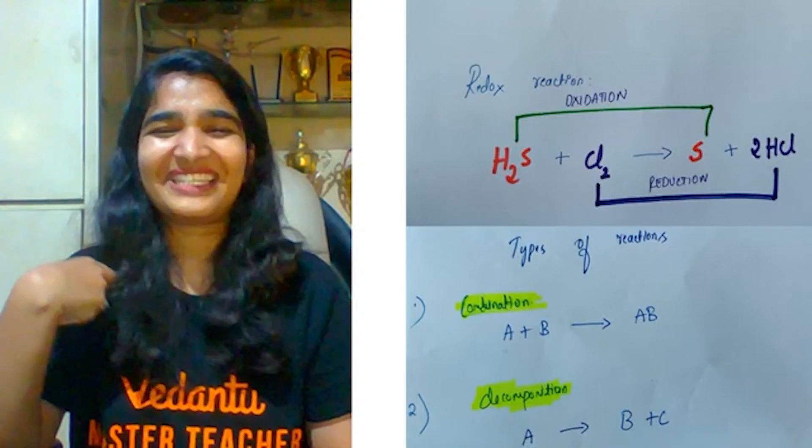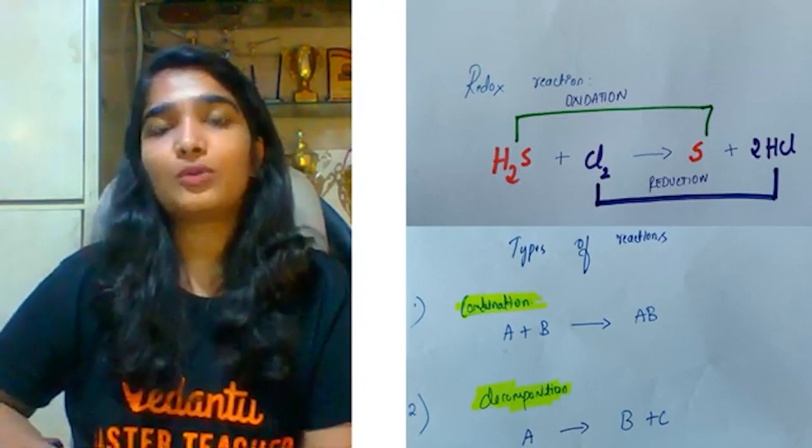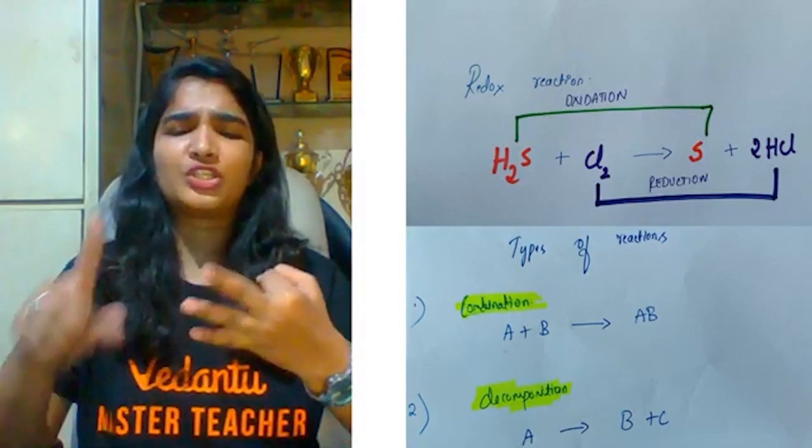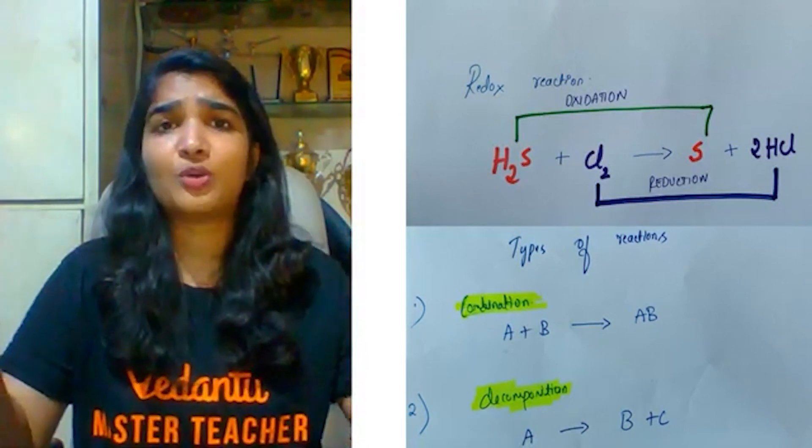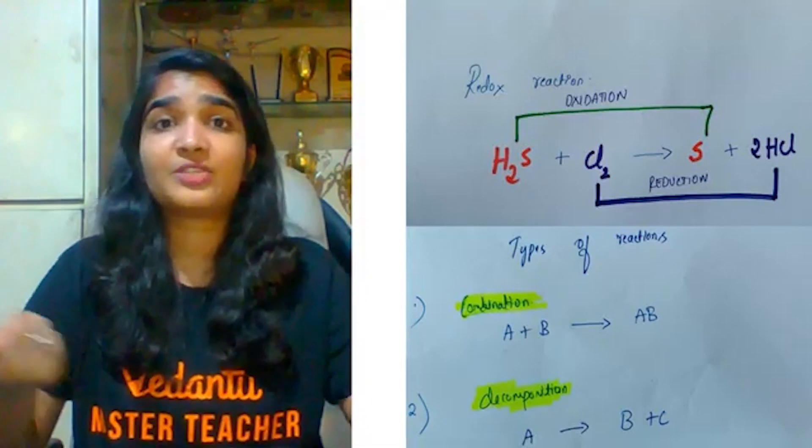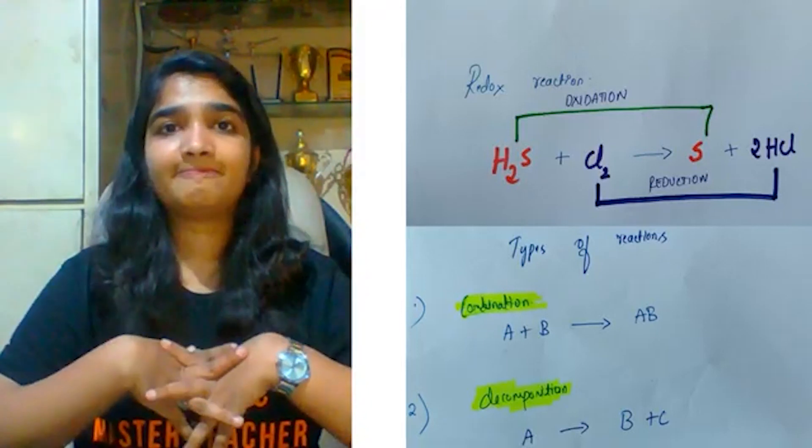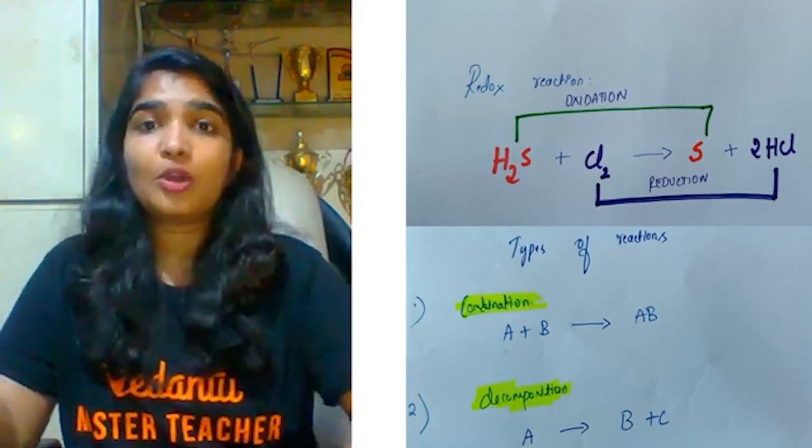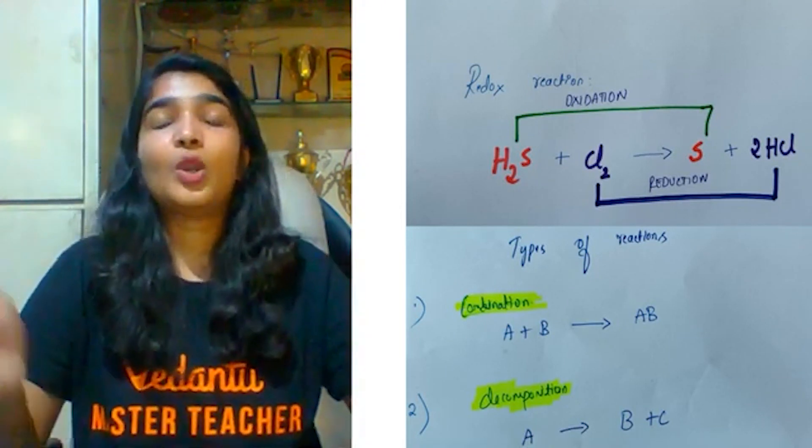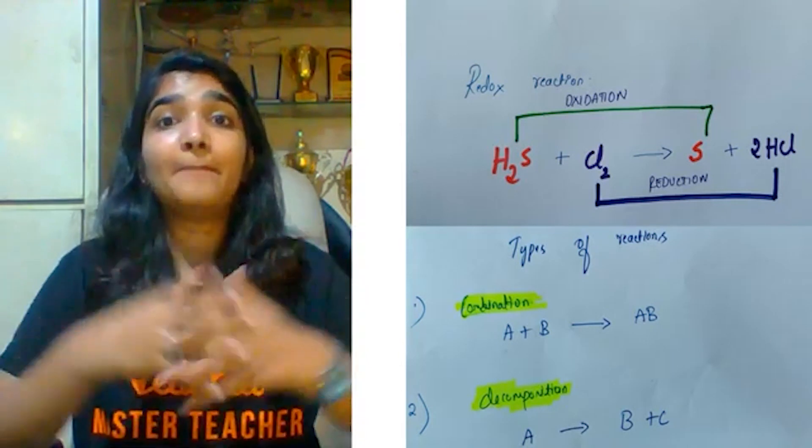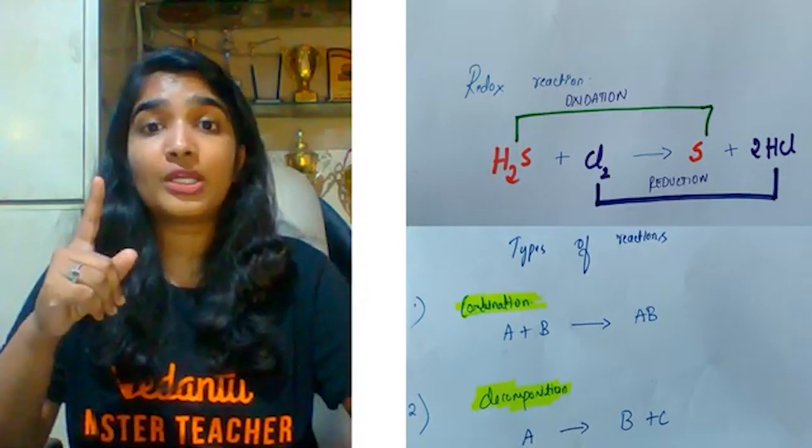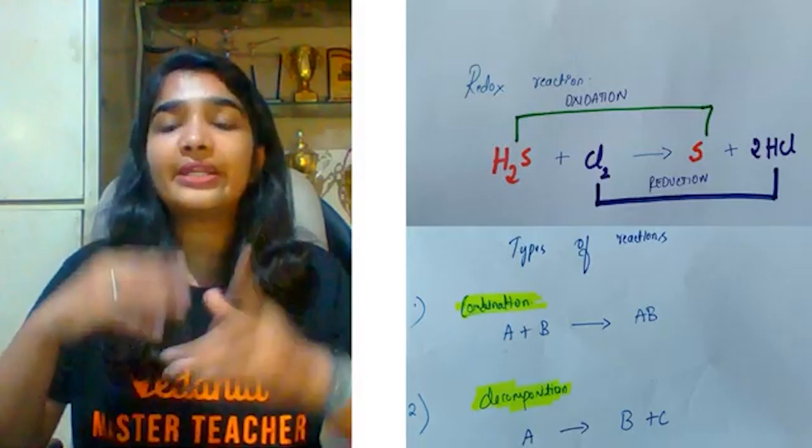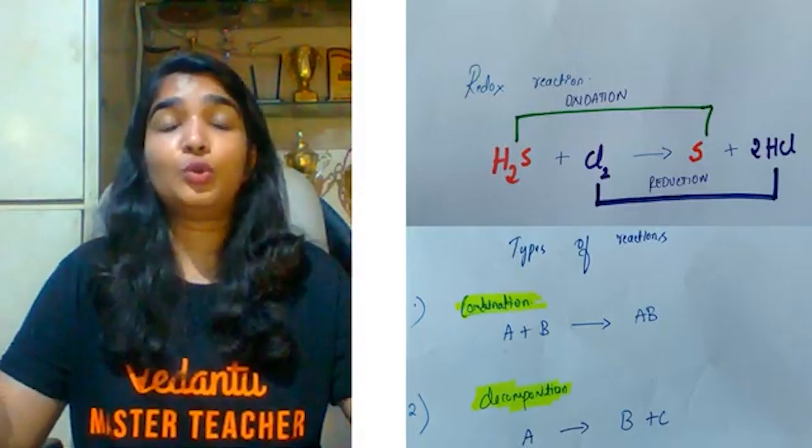Then coming to the types of reactions. We know how many reactions we have in chemistry: combination, decomposition, exothermic, endothermic, reduction, oxidation, displacement, double displacement. But see: A + B gives AB - combination reaction is done. When two or more reactants combine to give a single product, it is a combination reaction. Decomposition: single reactant breaks down to give two or more products. Done.